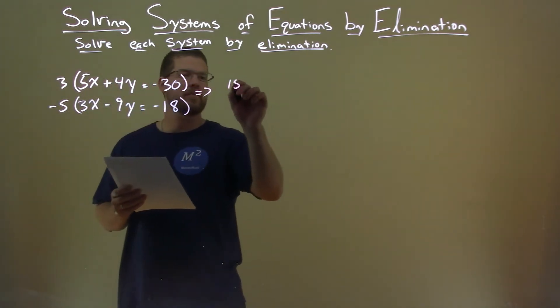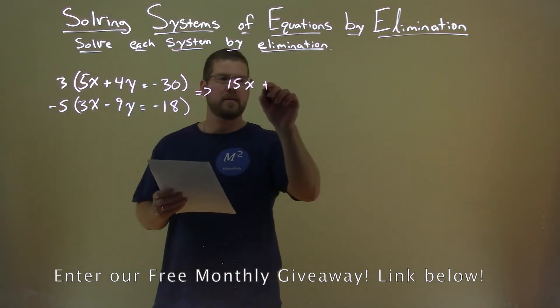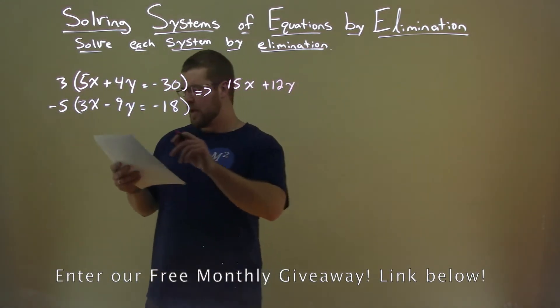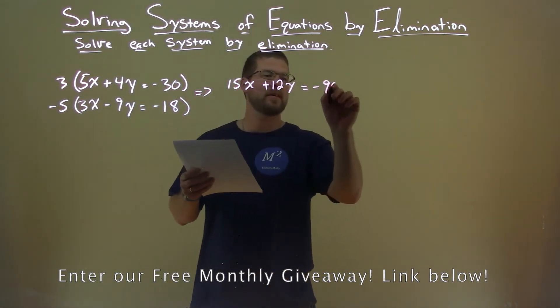3 times 5x is 15x. 3 times 4y is 12y. And 3 times negative 30 is negative 90.